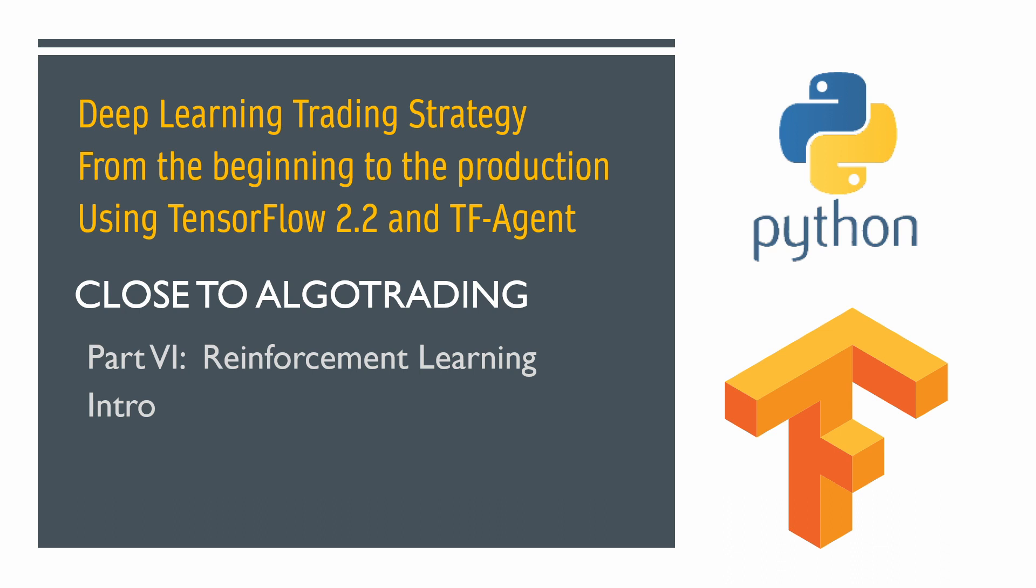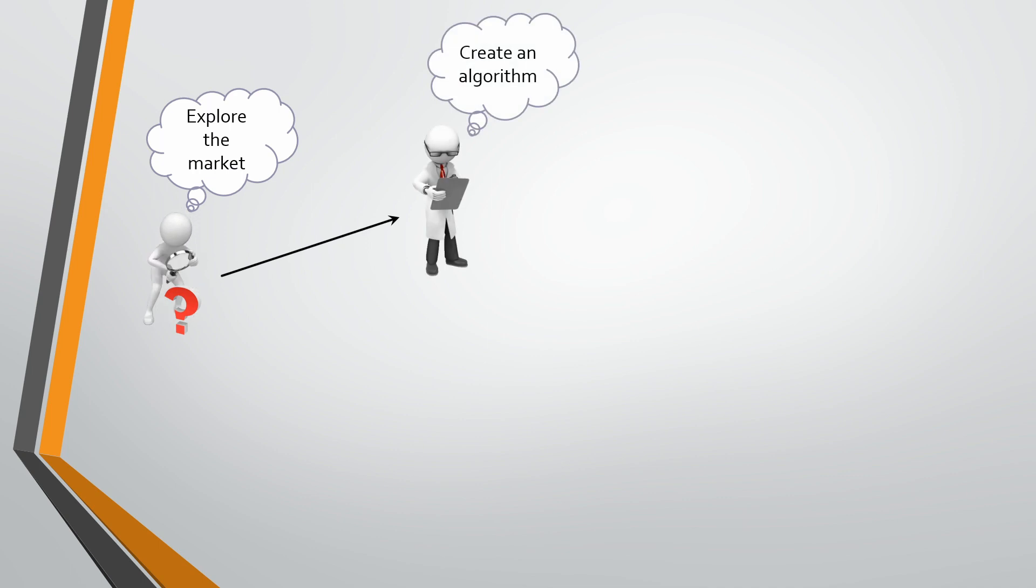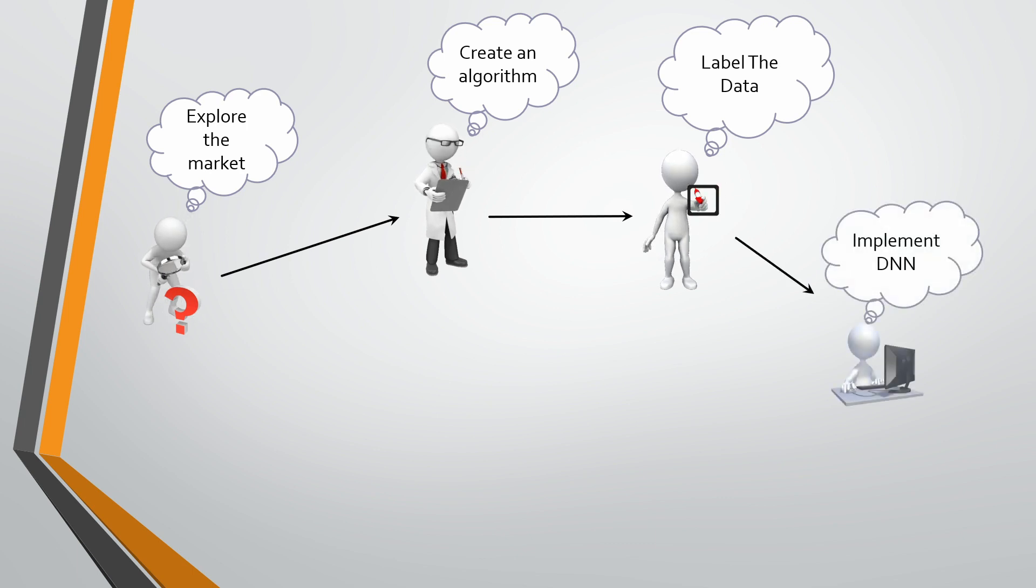As you may remember, we are trying to build a profitable trading strategy using deep learning. So far our approach looked like this: We observed market conditions trying to find inefficiencies, then we created simple rules and prepared the data. After the data preparation and data labeling is done, we implemented our deep learning model.